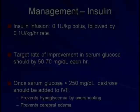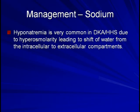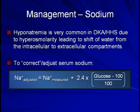Hyponatremia is very common to both DKA and HHS due to a transcellular shift of water from the intracellular to extracellular compartments triggered by serum hyperosmolarity — a situation called hyperosmolar hyponatremia. To correct for this effect, you can take the measured serum sodium and add 2.4 times the measured glucose minus 100 over 100. Note that many pocketbooks cite a correction factor of 1.6, but the literature supports a value of 2.4.